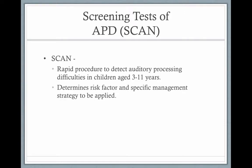There is a long series of tests used to screen for auditory processing disorder. A very well-known one is called the SCAN — a rapid procedure to detect auditory processing difficulties in children aged 3 to 11. It determines the risk factor and specific management strategies that could be applied. First the child will go through a full audiological evaluation, and then they'll sit through the SCAN.